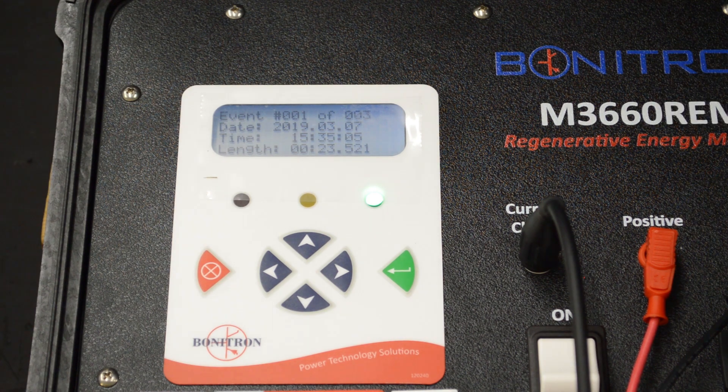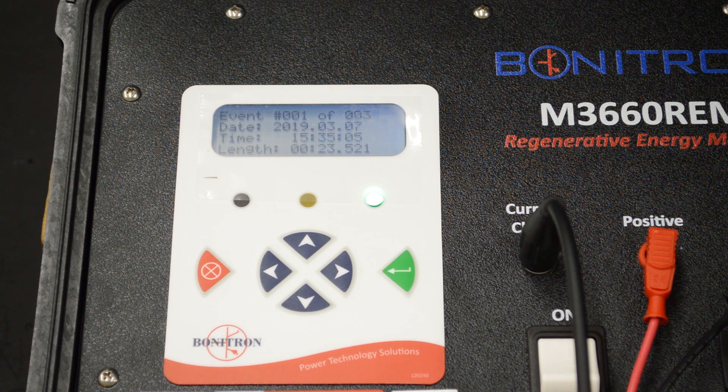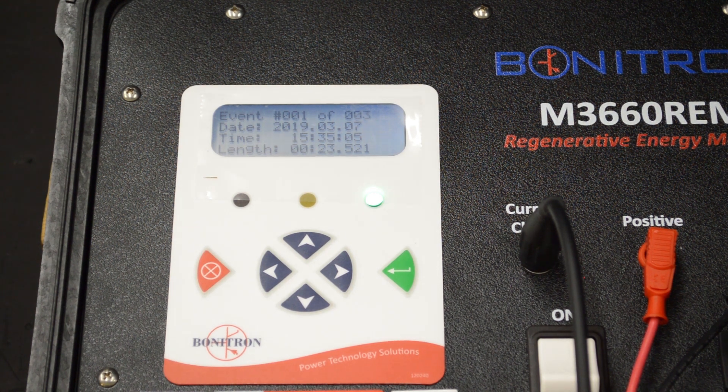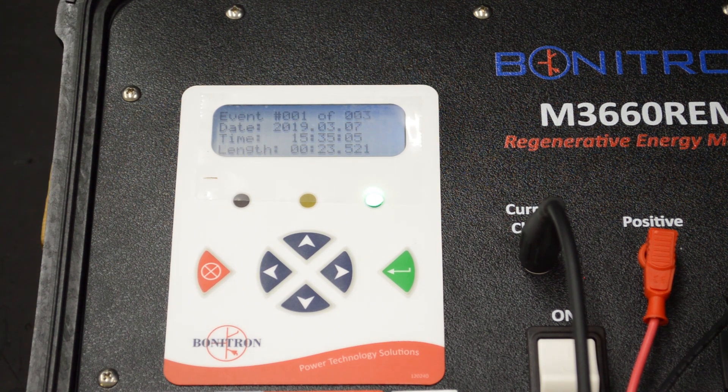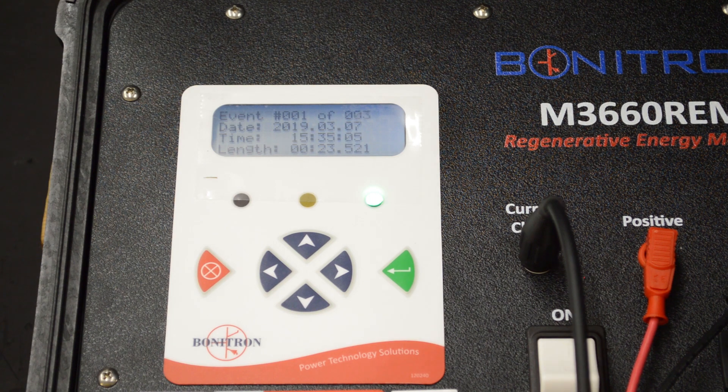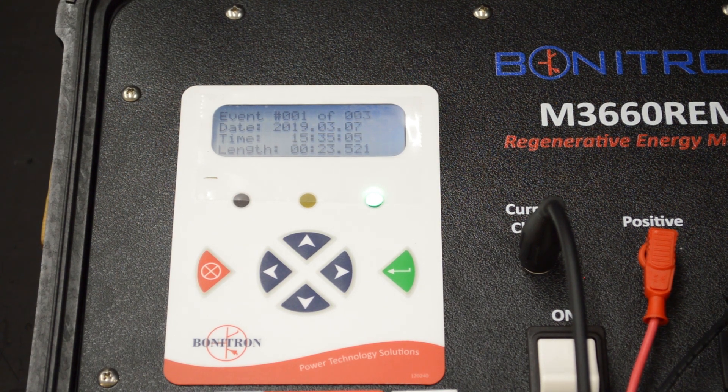Also, if you don't have a braking transistor and resistor connected to the drive in the DC bus, you can provide a load bank with this unit and use it without the braking transistor, and monitor regen events if you're trying to determine what kind of regen solution you might want.